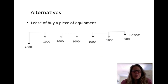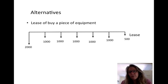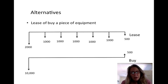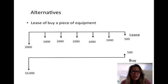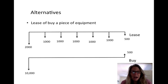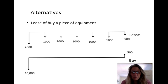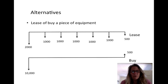Another example is leasing a piece of equipment. The lease has an initial cost and then an ongoing lease payment with a small end-of-period cost, versus buying it where we spend a large amount at the beginning and then have a salvage value when we sell it at the end. These are very different cash flow alternatives and we can't do both — we can either lease or buy — but we need to look at what is the difference between the two.